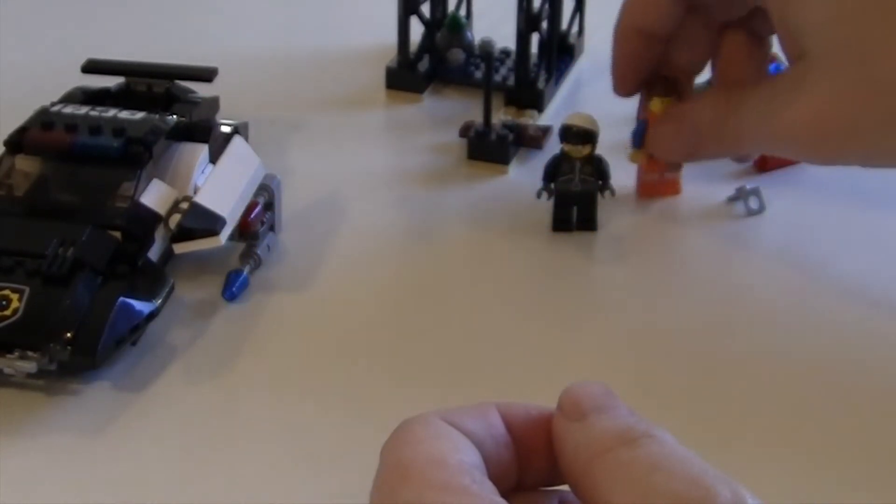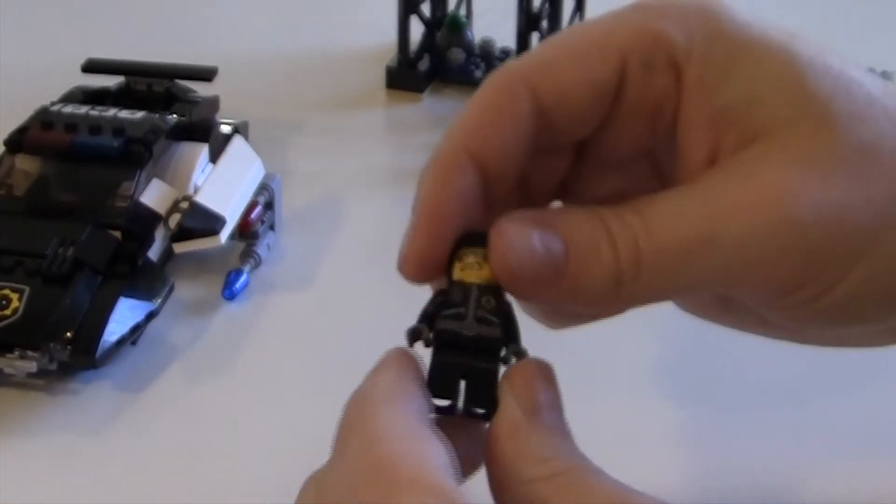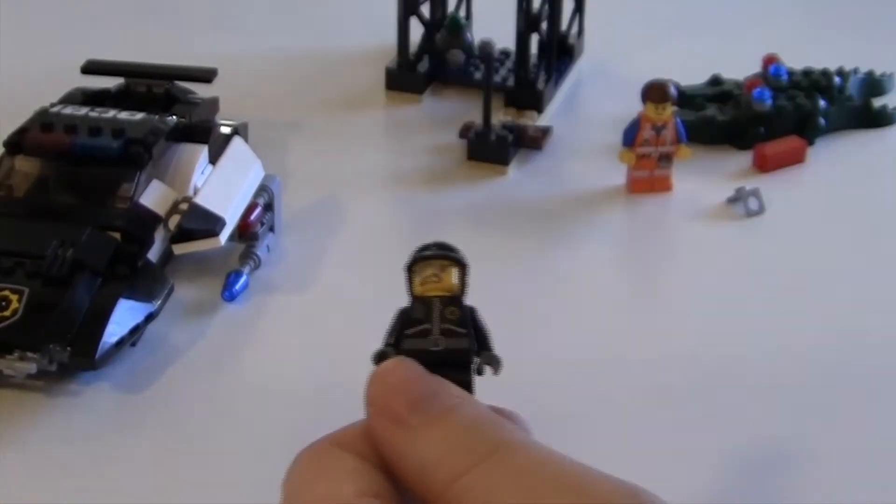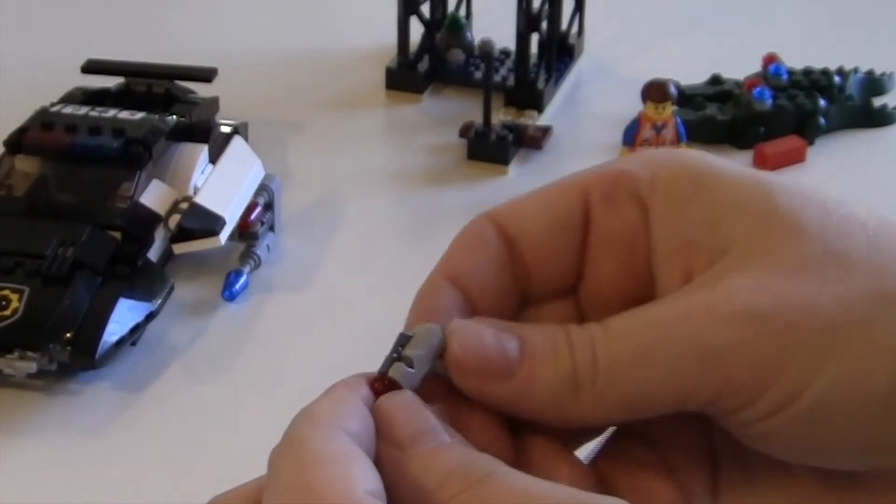So, that's Emmet. And you have, of course, bad cop. He's actually got a gun with him, one of these shooters.